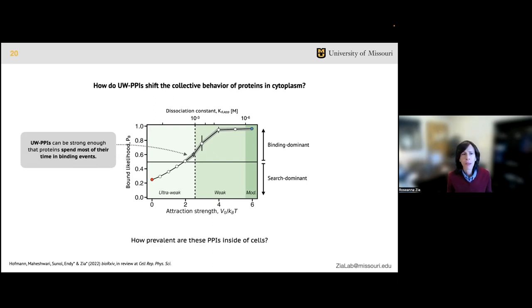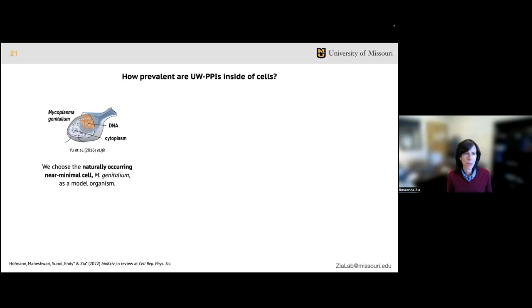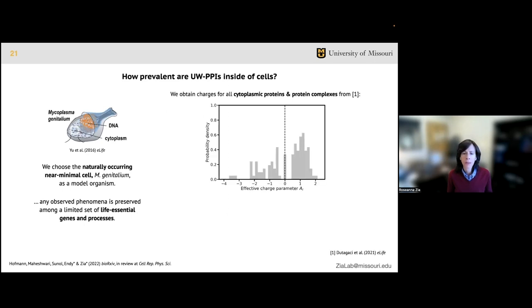When a protein spends more than half its time in encounters with other proteins, whether the same partner or changing partners, we say it's in a binding dominant versus search dominant regime. In our simulations, we found that a subset of protein-protein interactions are both ultra-weak and therefore largely unexplored in experiments, yet also strong enough to shift behavior into the binding dominant regime. These results demonstrate the impacts of ultra-weak protein-protein interactions in a model system. But then a real question became, how common are they inside living cells? Would biologists or those working with biological proteins care about these results?